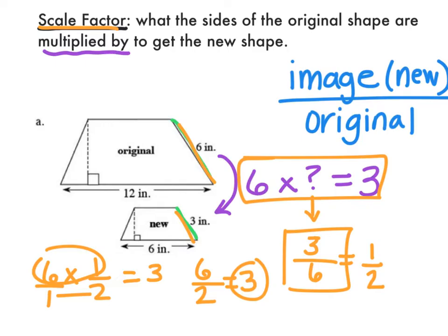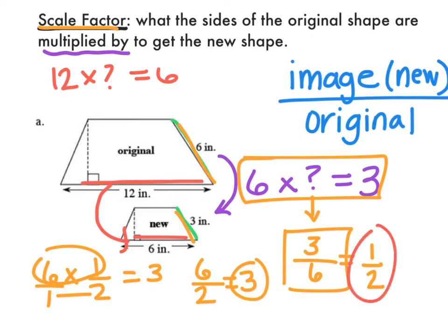Now I'm going to look at another side to confirm. I have side 12, and I want to know what scale factor gets me to 6. So 12 times something equals 6 — the scale factor should be 1/2. Let's check: 12 times 1/2, putting a 1 under there — 12 times 1 is 12, 1 times 2 is 2, and 12 divided by 2 is 6. That works, so 1/2 is confirmed as the scale factor.